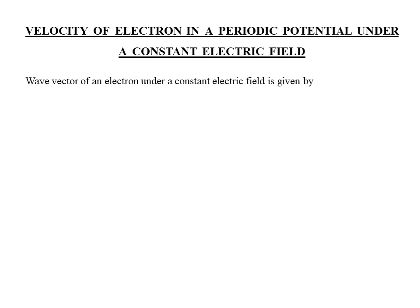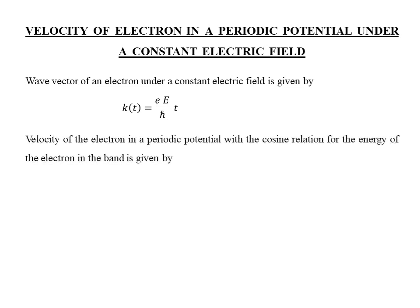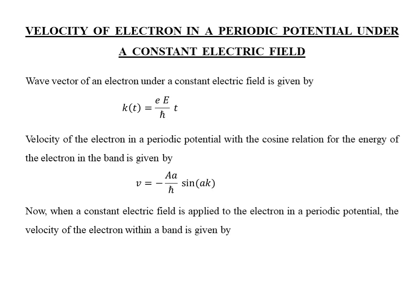This time dependence of the wave vector we have already derived, shown here again for easy follow-up. The velocity of the electron in a periodic potential, with a cosine relation for the energy of the electron in the band, is given by this expression. Now when a constant electric field is applied to this electron, the wave vector changes linearly with time. So the velocity of the electron, incorporating the wave vector changes, can be given by this. And as the velocity is the rate of change of displacement, I replace v by dx by dt and we get this differential relation, which we can solve by standard techniques for the displacement of the particle.